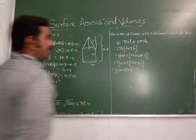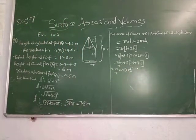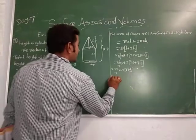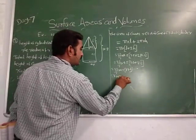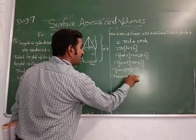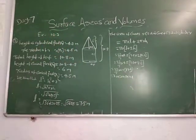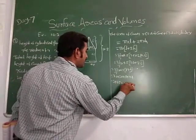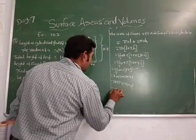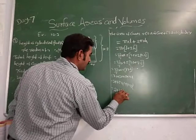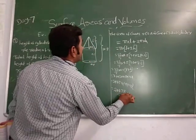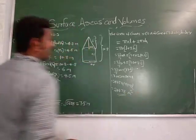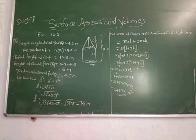Computing 3.142 into 4.5 into 17.1 equals 241.78 meter square. That is the area of canvas required.